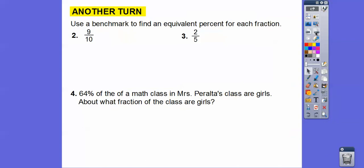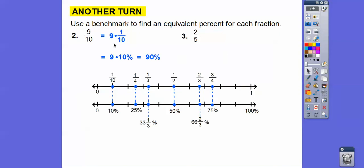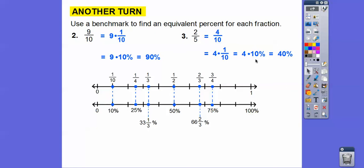Use benchmarks to find equivalent percents for each fraction. Nine-tenths is nine times one-tenth; since one-tenth equals 10%, nine times 10% is 90%. For two-fifths, convert to four-tenths by multiplying by two over two, which is four times one-tenth, or four times 10%, giving 40%.